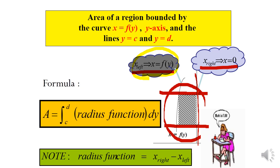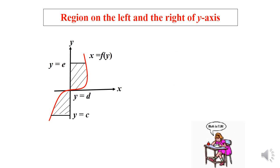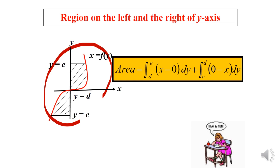For regions on both the left and right of the y-axis, the formula is: area equals the integration of (x minus 0) dy from d to e, plus the integration of (0 minus x) dy from c to d.